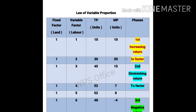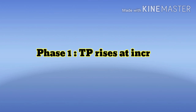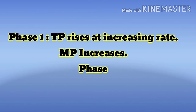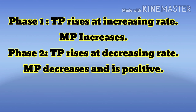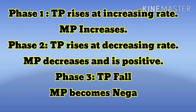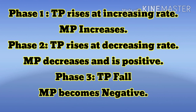So here are three phases. In the first phase: increasing return to a factor — TP rises at an increasing rate and MP also increases. In the second phase: diminishing return to a factor — TP is still rising but at a decreasing rate, and MP is decreasing but remains positive. In the third phase: negative return to a factor — TP falls and MP becomes negative.